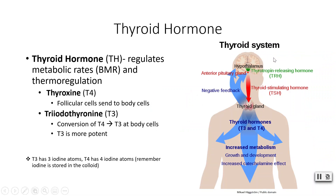We have previously mentioned that the hypothalamus would secrete TRH, which would stimulate your anterior pituitary to secrete TSH, which would then stimulate the thyroid gland itself to release T3 and T4, which regulate your BMR and thermoregulation.